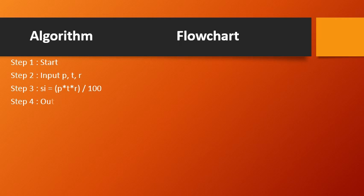Step 4 will be: Output SI. Notice that the SI used in step 3 uses lowercase, and the same SI is used in the output. As discussed in previous examples, the names we use are called identifiers or variables — we will learn those in upcoming classes. Whatever notation we use, uppercase or lowercase, we must use consistently in all subsequent statements. Step 5, the last step, is Stop.